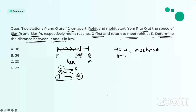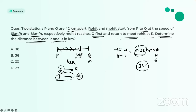Sorry for the interruption — some echo issues arose so I switched rooms. Mohit already reached Q in 5.25 hours. In those same 5.25 hours, Rohit also travels: 6 × 5.25 = 31.5 kilometers. Rohit has completed 31.5 km out of 42, so the remaining distance between them is 42 − 31.5 = 10.5 kilometers.